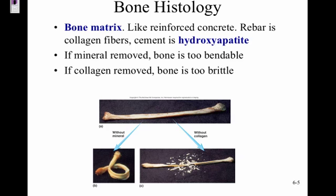The bone matrix is like reinforced concrete, with collagen fibers running through hydroxyapatite. If the mineral part — the hydroxyapatite — is removed, the bone becomes too bendable. If the collagen is removed, like removing rebar, the bone becomes too brittle and shatters easily. You need a mixture of both.